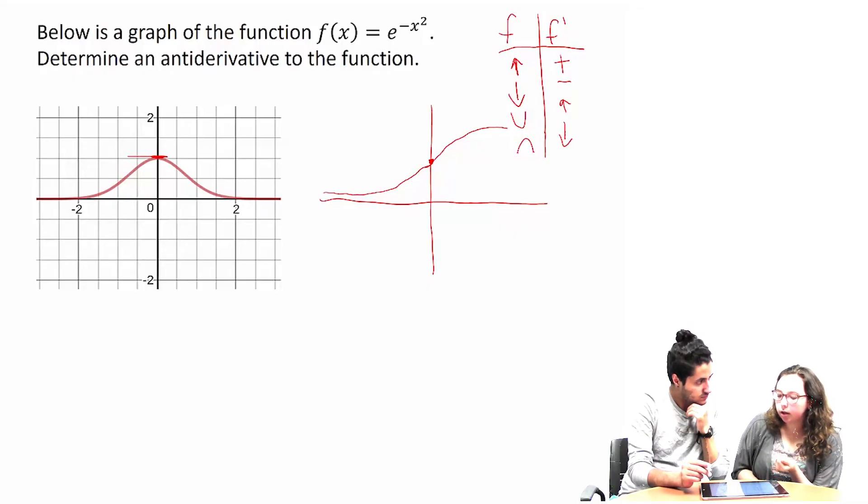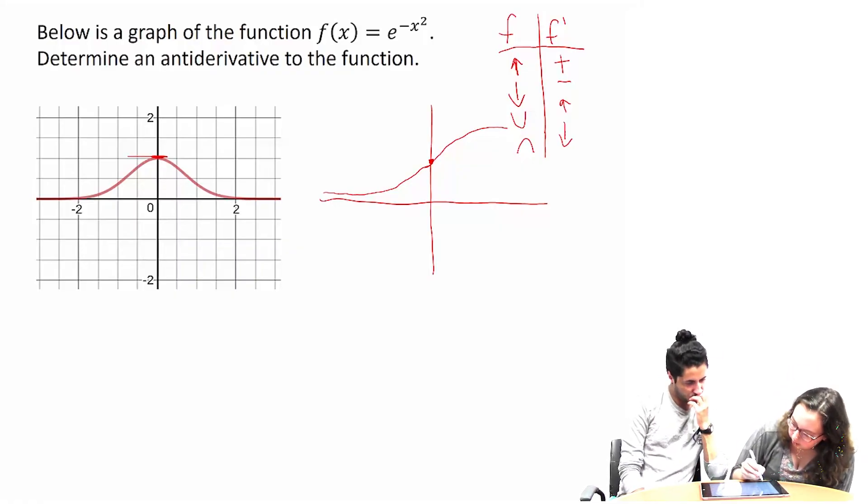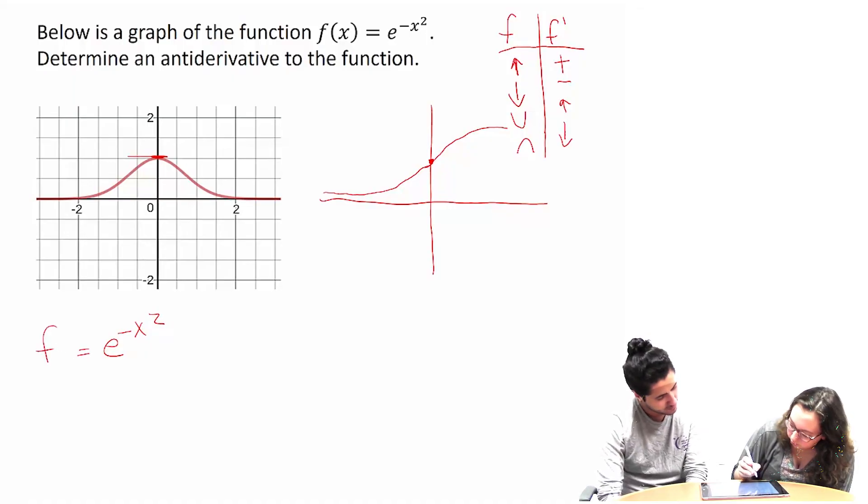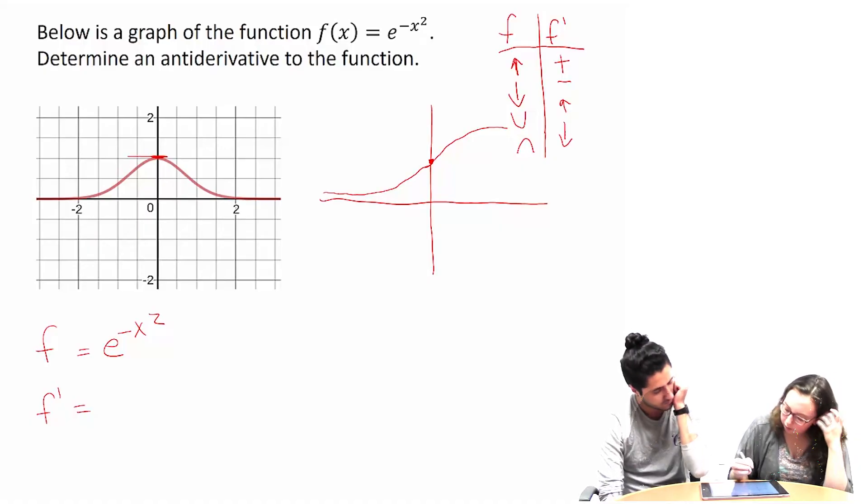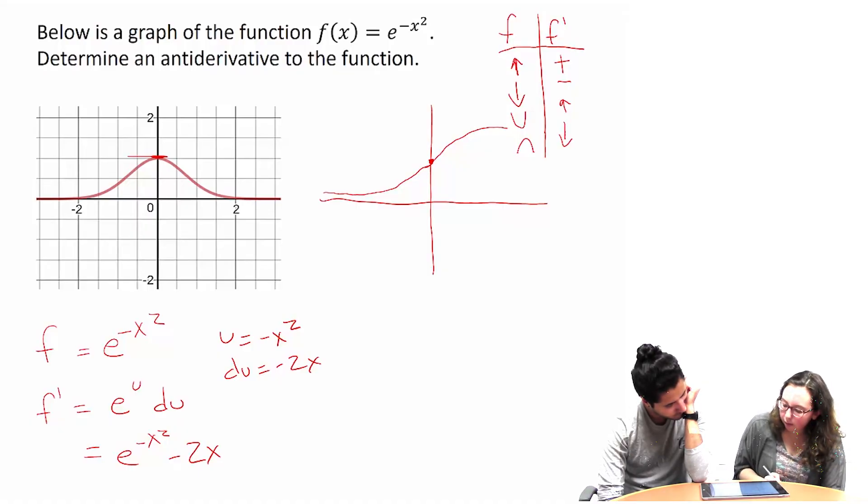I know with functions like this, usually the derivative is itself. So if we have e to the negative x squared, say that's our function, then our f prime—to do that, it would be e to the negative x squared times the derivative, which is—but that is not what we started with. So this one won't work.